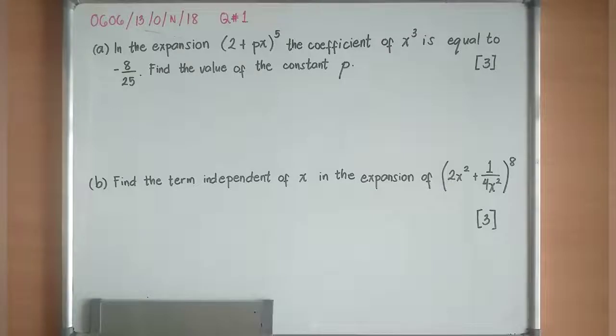The first question says, letter A: in the expansion (2 + Px)^5, the coefficient of x^3 is equal to -8/25. Find the value of the constant P.